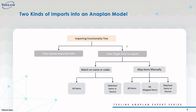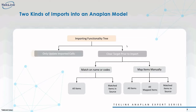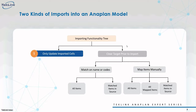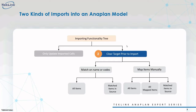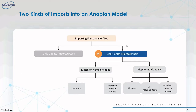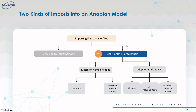There are two kinds of imports within Anaplan, and here's a decision tree that shows the exact options. The first option is to only update imported cells — a standard delta import that does not require further complexity. Or you can select the second option, which is to clear the target module prior to import. Depending on subsequent choices, this can be a full load clearing all items and reloading them, or you can clear specific line items or specific mapped list items that have a match in the source.